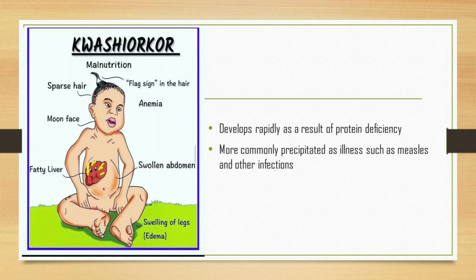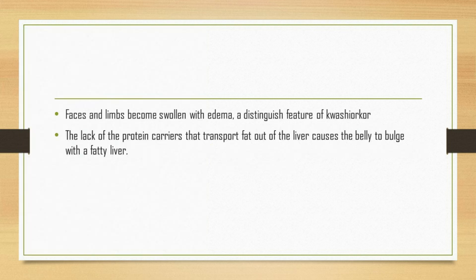Other complications of kwashiorkor include hypoglycemia (low blood sugar), hypothermia (low body temperature), hypovolemia (low blood volume), and electrolyte imbalances resulting from dehydration. Additional complications include immune system failure causing frequent infections and slow wound healing, cirrhosis of the liver and liver failure, atrophy of the pancreas leading to digestive difficulties, atrophy of the gastrointestinal mucosa possibly leading to small intestine bacterial overgrowth, growth and developmental delays in children, and in severe cases, starvation and death.